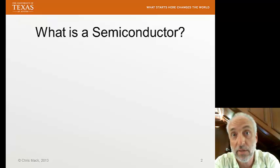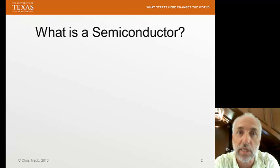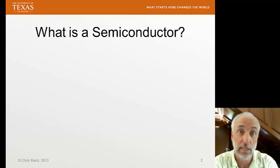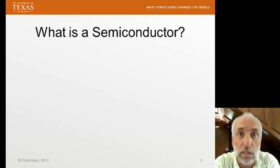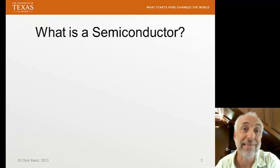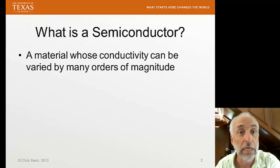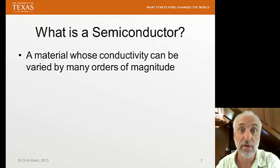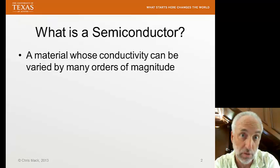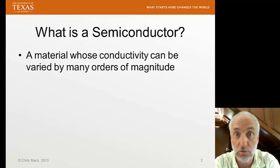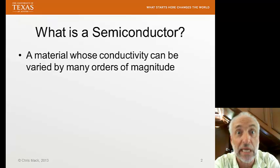So what is a semiconductor? We know what an insulator is — something that doesn't conduct electricity well. We know what a conductor is — something that does conduct electricity well. It's tempting to think that a semiconductor must be something in between, but that is definitely not the case. A semiconductor is a material whose conductivity can be varied by many orders of magnitude — 2, 3, 4, 5, 6 orders of magnitude for good semiconductors like silicon. This allows us to switch between being an insulator and being a conductor.